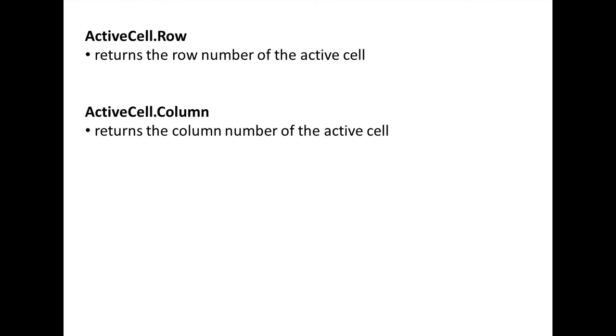Two other useful statements are ActiveCell.Row and ActiveCell.Column. ActiveCell.Row determines the row number of the active cell. ActiveCell.Column determines the column number of the active cell. The number 1 is associated with column A, the number 2 is associated with column B, and so on.